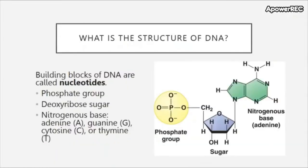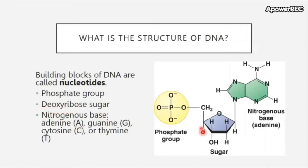DNA is made up of building blocks called nucleotides. Nucleotides are made up of three different molecules that are all interconnected. One is a phosphate group, which has a phosphorus atom in the middle surrounded by oxygens. This is linked to a sugar molecule — the sugar in DNA is deoxyribose. Ribose is a type of sugar just like glucose or fructose, and it is the deoxy form, meaning one of the oxygen groups has been removed. Finally, all nucleotides have a nitrogenous base attached to them. There are four bases in DNA that make up the code.